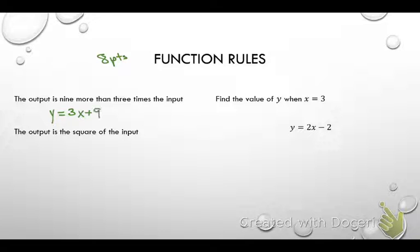Now, another option, because this is multiple choice, I could say y equals 9 plus 3x. Is that the same thing? No, it's not. The order matters. So it needs to be all these function rules will be written in slope intercept form, y equals mx plus b. x has to come first, then the number. What about output is the square of the input? Y equals x squared. That's 8 points for function rules.